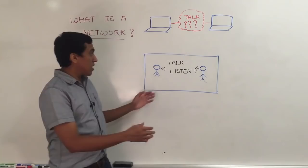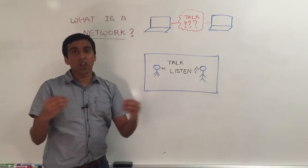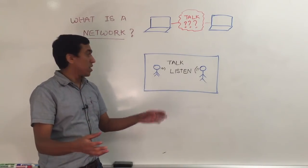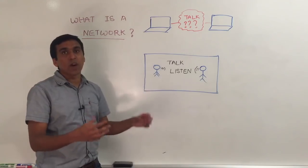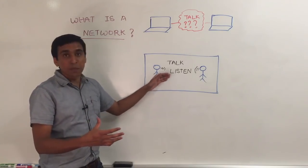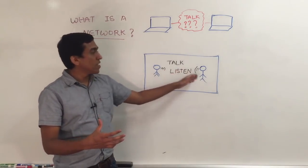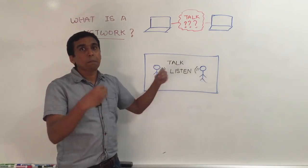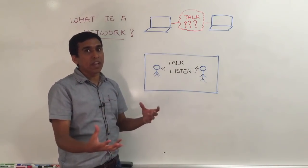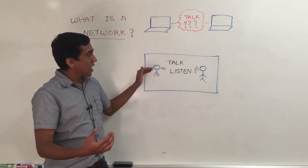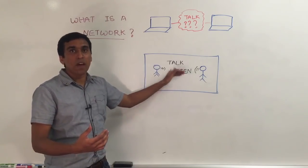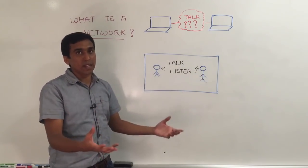Before we answer that question, let's take the example of two people who are trying to communicate with each other. What happens here? When one person talks, he's creating vibrations in the air, which is the medium, and these vibrations reach the other party. That's how two people communicate. One person talks and the vibrations travel through the medium and reach the other person who is listening.